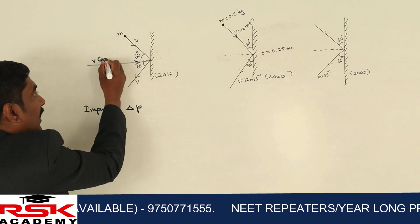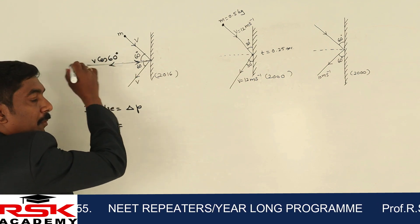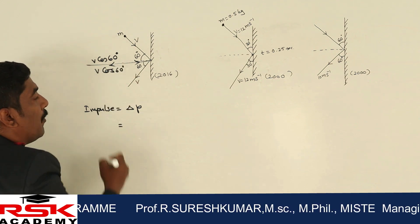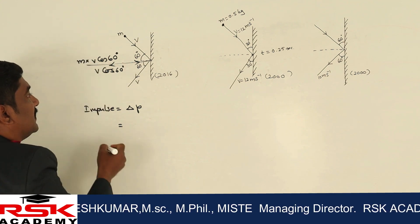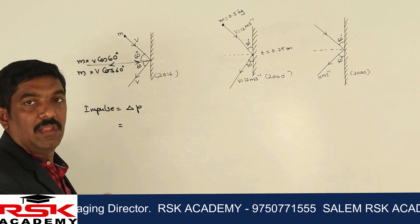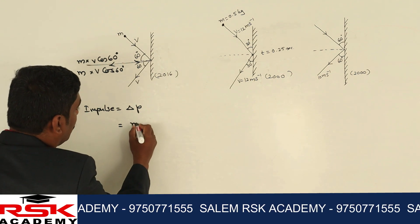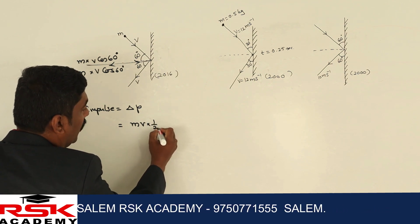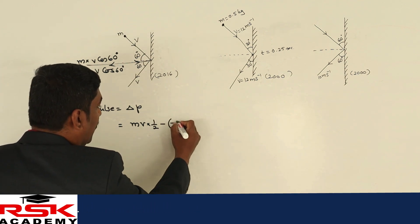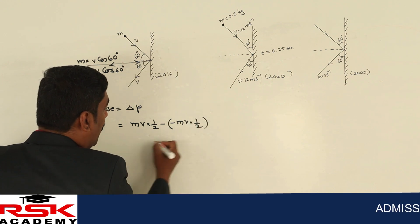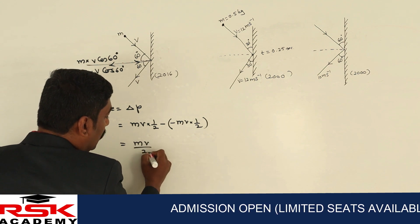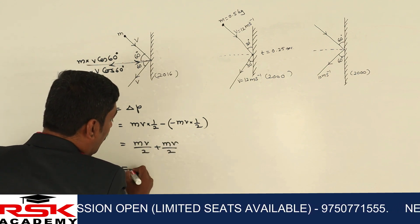We call the velocity v. The component along the wall is v cosθ, which is v cos60. The momentum component is mv cos60. The cos60 value is 1/2, so the change in momentum is mv cos60 in one direction, minus mv times 1/2 in the opposite direction, giving plus mv/2 plus mv/2, which equals mv.